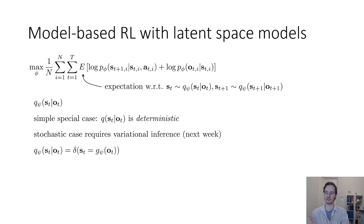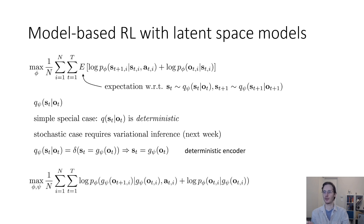So, instead of outputting a distribution over st given O2, we would just output a single st for our current O2. The stochastic case requires variational inference, which I'll discuss next week, but the deterministic case is quite a bit simpler. So, the deterministic case can be thought of as a delta function centered at some deterministic encoding, g psi of O2. So, that means that st is equal to g psi of O2. And if we use this deterministic encoder, then we can simply substitute that in everywhere where we see an s in the original objective, and we can remove the expectation. So, now our objective is to maximize, with respect to phi and psi, the sum over all of our trajectories, of the sum over all of our time steps, of log p g of O2 plus 1 given g of O2 comma AT, plus log p of O2 given g of O2.